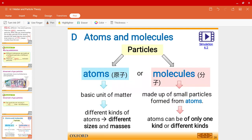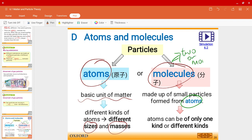Let me talk a bit more about atoms and molecules. So, in particles, we can separate them into two, atoms or molecules. So, atoms over here, they're the basic unit of matter. They come in different sizes and masses. On the other hand, molecules, they are made up of small particles formed from atoms. So, in other words, I could say it is made up of two or more atoms. And these atoms can be of only one kind or different kinds. I'll talk more about this. What do I mean by one kind or different kinds? Let's see some examples first.